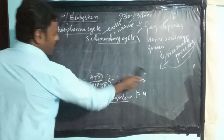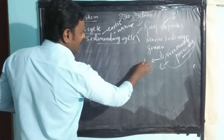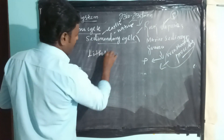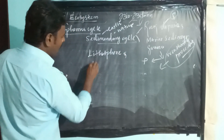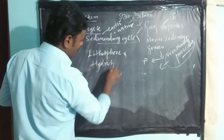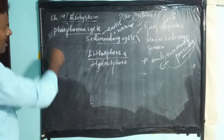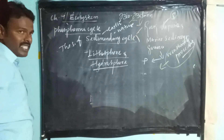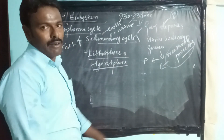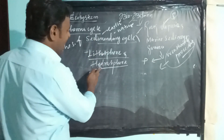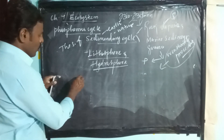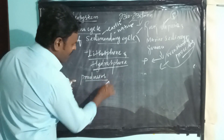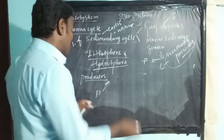The surface of soil is called the lithosphere, whereas the hydrosphere is the total amount of water surface including oceans or aquatic regions. As we already learned from the food chains, the producer absorbs phosphorus as phosphate ions from the soil.